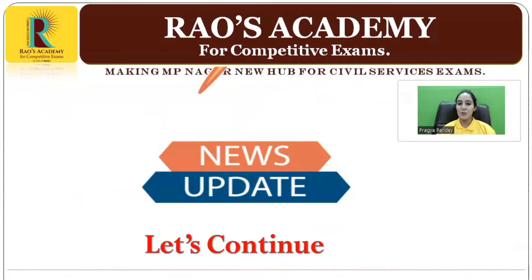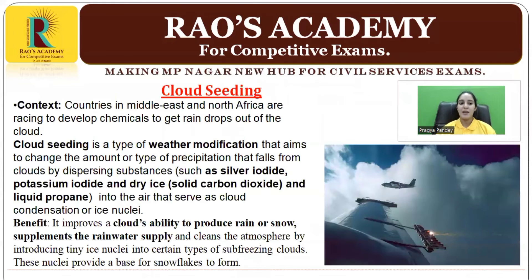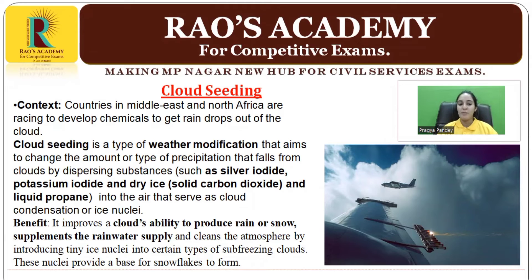Let's move further and see what is in the news. Countries in the Middle East and North Africa are racing to develop chemicals to get raindrops out of the clouds. Cloud seeding is a type of weather modification that aims to change the amount or type of precipitation that falls from clouds by dispersing substances such as silver iodide, potassium iodide, dry ice, and liquid propane into the air, which serve as cloud condensation or ice nuclei.